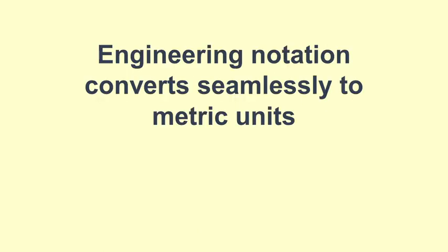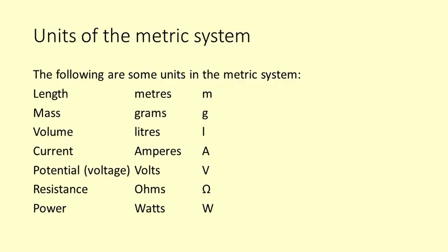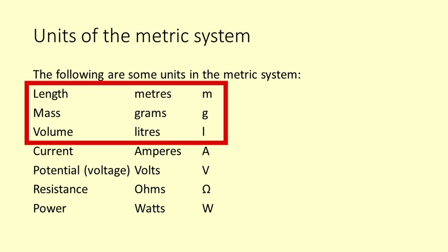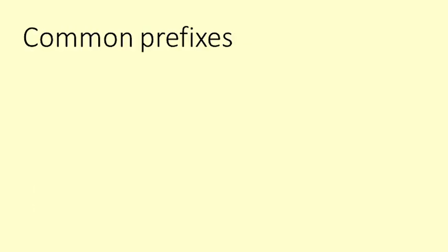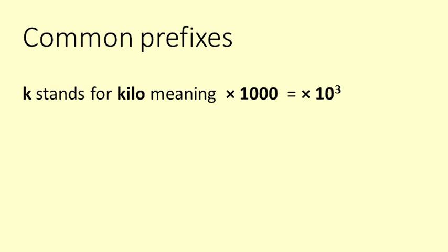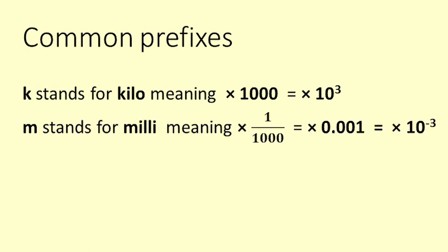The very convenient thing is that engineering notation converts seamlessly to metric units. The units of the metric system you are possibly familiar with are metres, grams and litres. We use these and related units in our everyday life. Common prefixes are k for kilo, which means a thousand times or times 10 to the power of 3, or m for milli, meaning one thousandth.